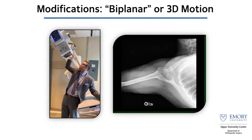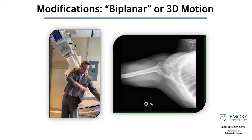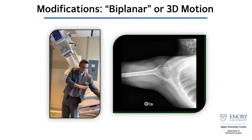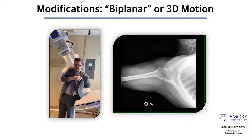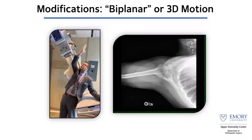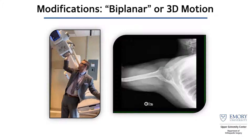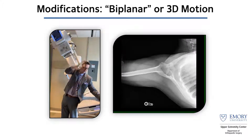One of my more interesting areas of focus has been the shoulder. As many of you who treat shoulder pathology know, it's very difficult to assess scapulohumeral rhythm and the interplay between the glenohumeral joint and the scapulothoracic joint.